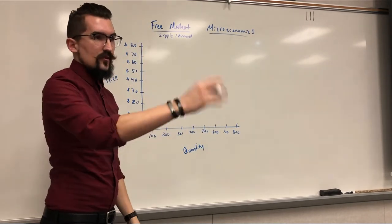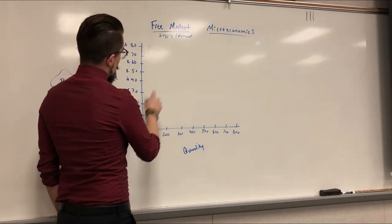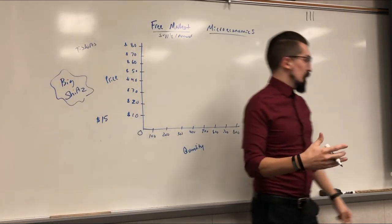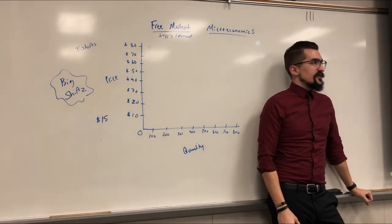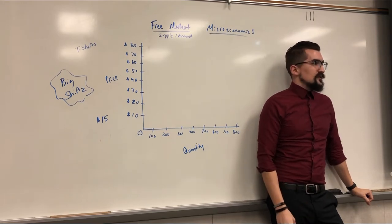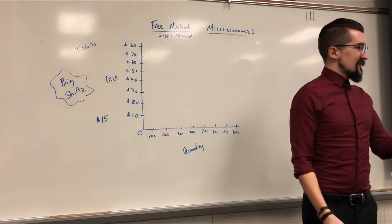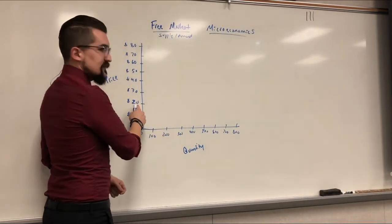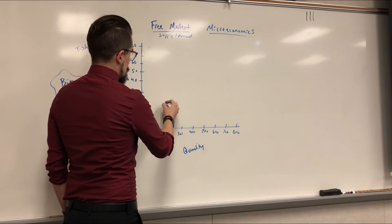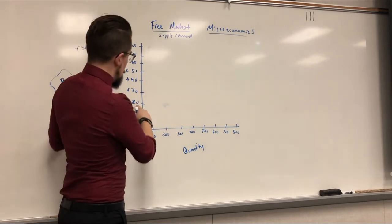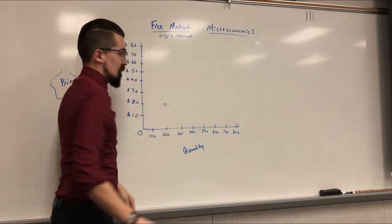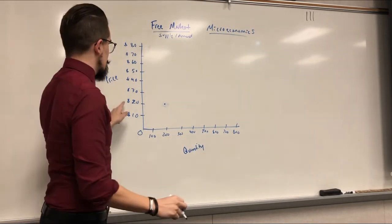At $20 per shirt, it costs me $15 to make, so I'm only making $5 profit per shirt. I'm not that willing to make a whole lot of shirts if I'm only making $5 each. So at $20, I'm willing to make maybe 200 shirts at most. I find the $20 on the y-axis, connect it with 200 on the x-axis, and make a dot right there.